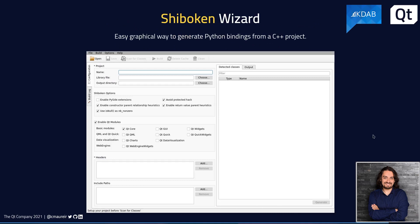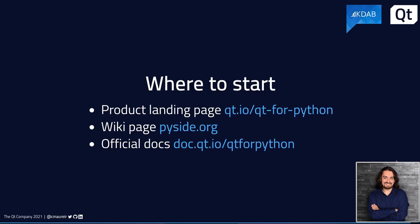Sometimes writing the type system is a little complicated. For that, we developed a commercial tool called Shiboken Wizard, where you can specify the options of your C++ application — whether it uses Qt or is plain C++. You can then generate the CMake file and also the type system for your project.